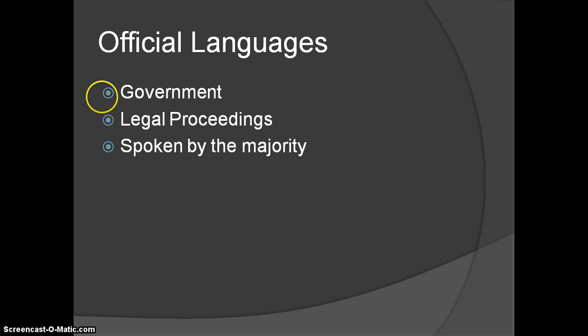When we talk about official languages, not every country has one — the United States does not. The official language of a state is decided upon by the government, and it is the language used in government documents and releases to citizens, in legal proceedings and courts, as the language taught in schools, and typically the language spoken by the majority of citizens.